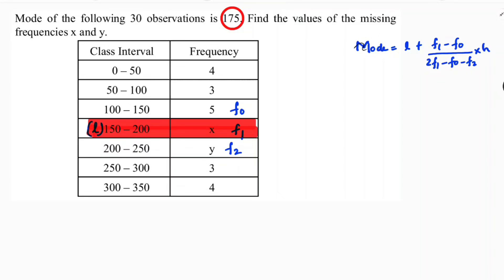Now if we substitute the values, but before that, my advice is write h. h is class size, which is 50 here, because if you subtract any two consecutive lower limits, like 100 minus 50 is 50, or 50 minus 0 is 50, or 150 minus 100, anything, so class size here is 50.